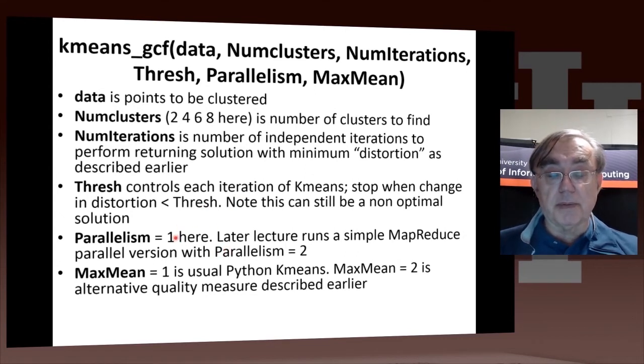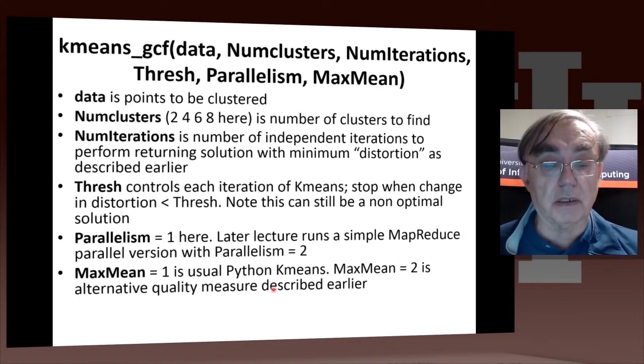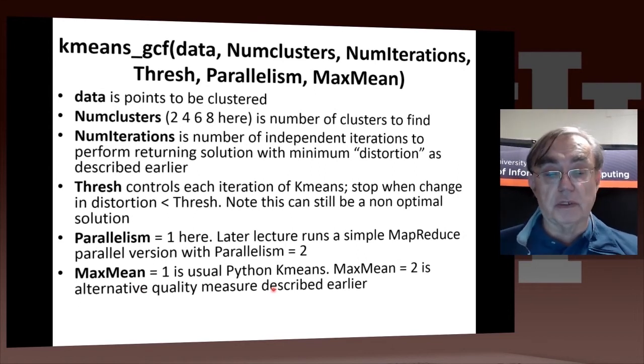And parallelism, as I mentioned, is always 1 for this lecture. And max mean is usually 1, that's the usual Python k-means. And 2 is an alternative quality measure, which we'll discuss later on. We will point out there's some cases where testing on the maximum is better than testing, probably better than testing on the mean distortion.